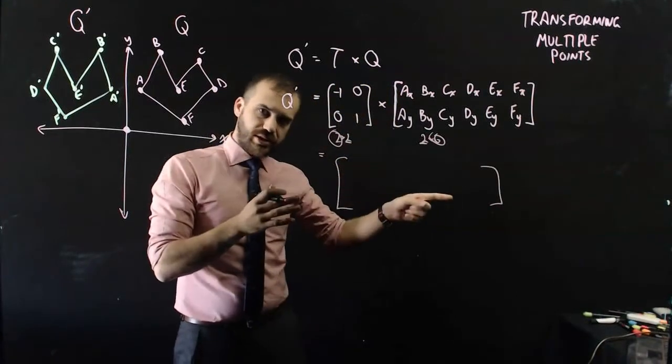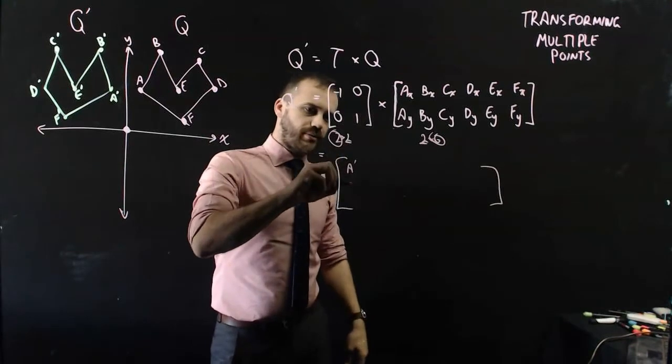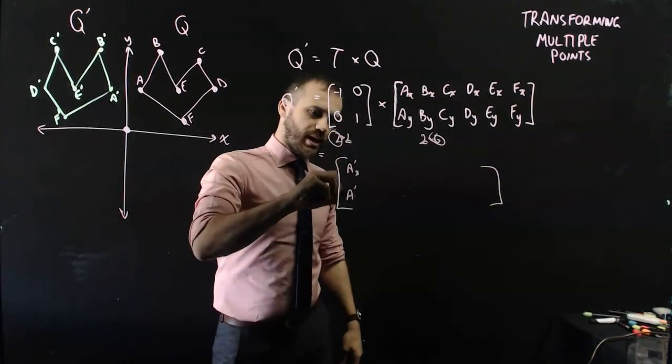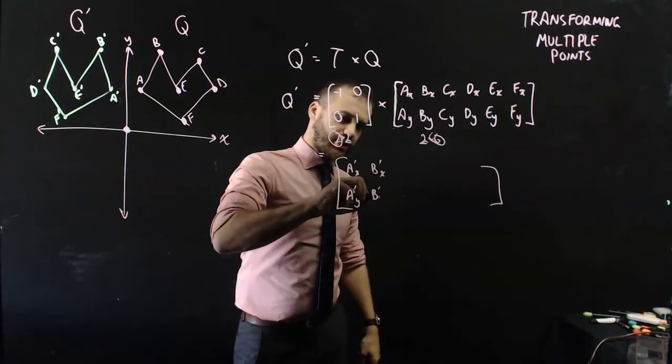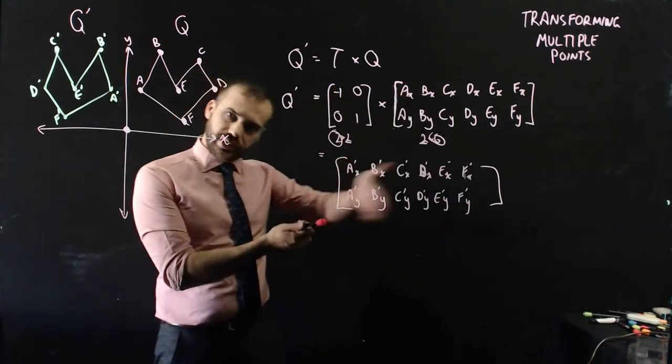And that 2 by 6 matrix will be A'x, A'y, B'x, B'y. And we get this lovely thing.